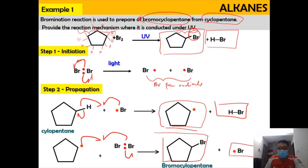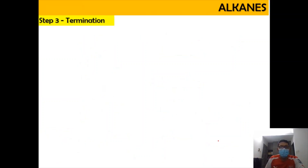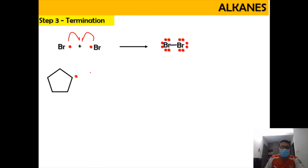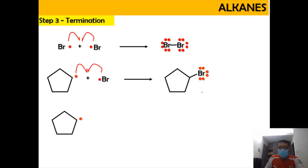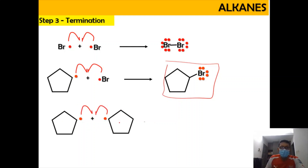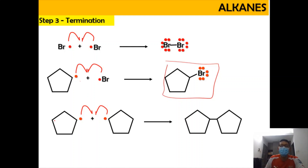For step 3, termination: we stop the generation of free radicals by combining them. Br• and Br• combine to form Br₂. The cyclopentane radical combines with Br• to produce bromocyclopentane (one of our products). And the cyclopentane radical can also react with another cyclopentane radical to form bicyclopentane (a by-product). This is where the generation of free radicals is stopped and we obtain our desired product.